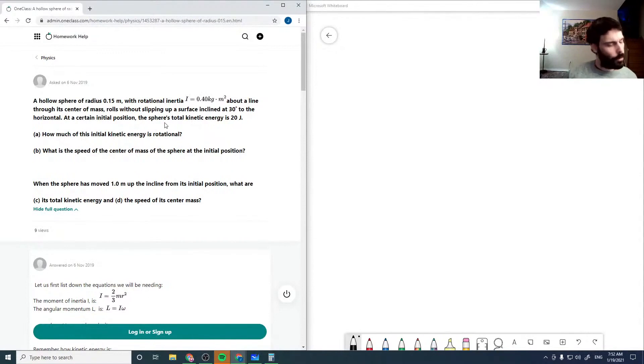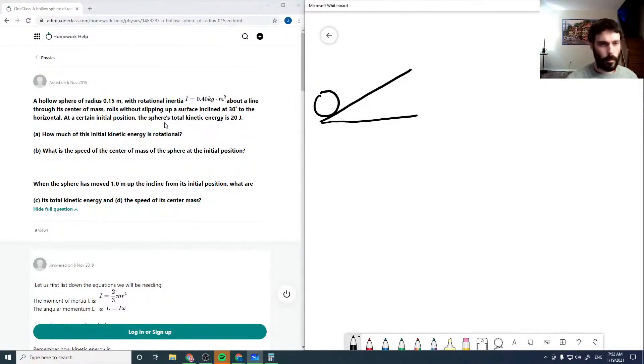Okay, so we've got a hollow sphere with a radius of 0.15 meters and it's on a 30 degree incline.